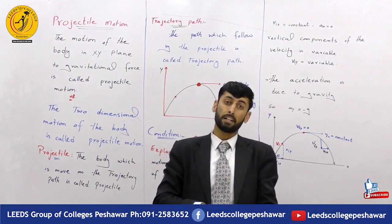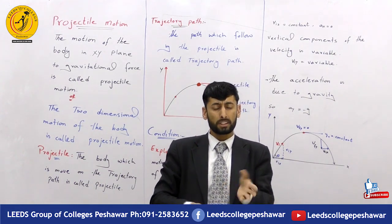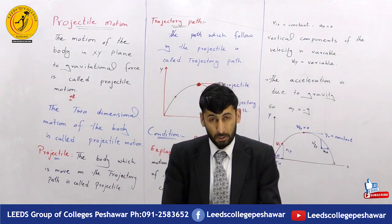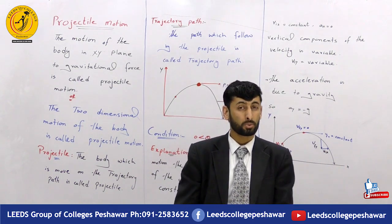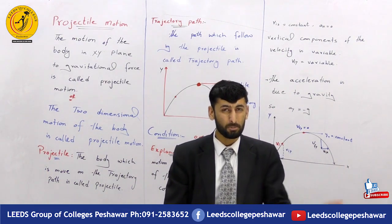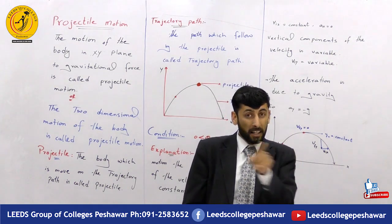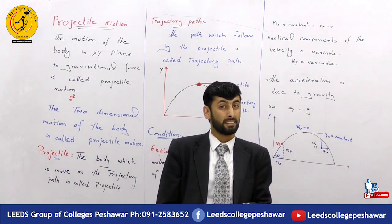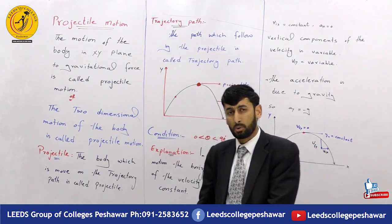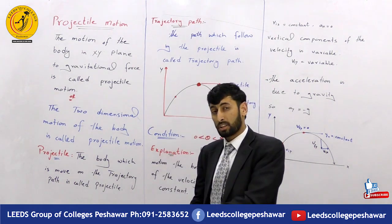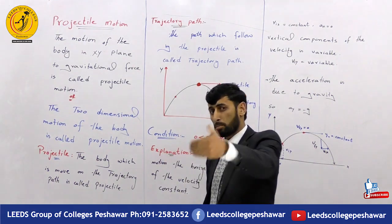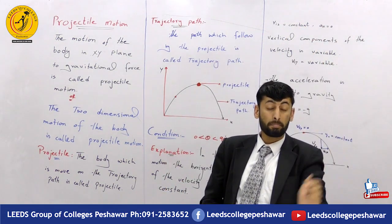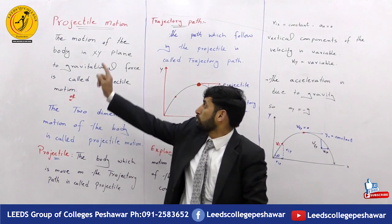Random motion is irregular. Linear motion follows a straight path. Curvilinear motion follows a curved path. A particle's motion leads us to the concept of projectile motion.